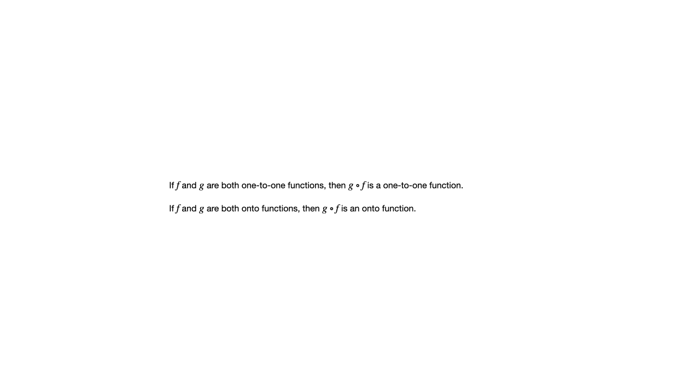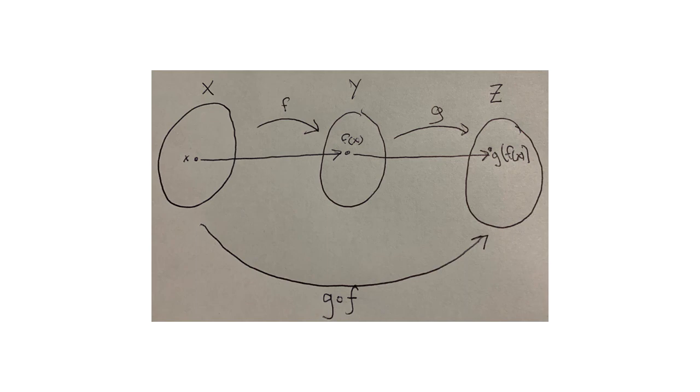Before we conclude this video, I meant to say, and let me say it now, that notice the order there, G of F, or G circle F. The F comes second in that notation, but it's actually the function that happens first. So, just to go back to this slide here, F is the function that happens first, and then G. Thinking of it again as that two-step process. But in the notation, we write G circle F.